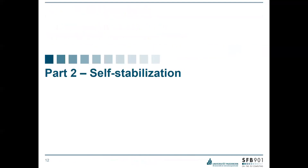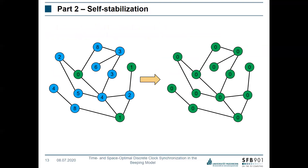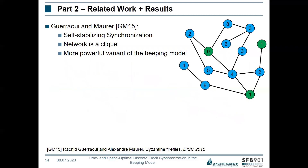Moving to Part 2: self-stabilization. Now we no longer have a well-defined initial state, meaning all nodes may have different clock values and different initial states — some in beep, some in listen — and we still want all nodes to get into sync. The closest related work is a paper from DISC 2015, where the authors give a self-stabilizing synchronization protocol for clique networks, but using a more powerful variant of the beeping model where each node can count the number of beeps received per round.